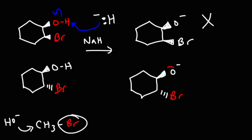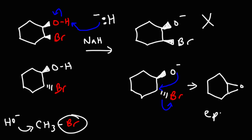For the other isomer, the bromine is in the back and the oxygen is in the front, so for this one we can get an intramolecular SN2 reaction. This oxygen can attack this carbon, kicking out the bromine, and what we get is a special kind of ether. When you get a three-membered ether like this, it is known as an epoxide. In order to get the epoxide, these two groups have to be anti with respect to each other, and then the carbon-oxygen bonds of the epoxide will be on the same side.